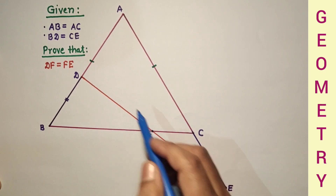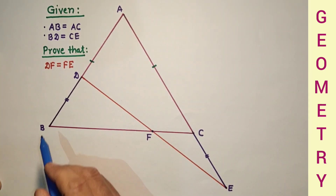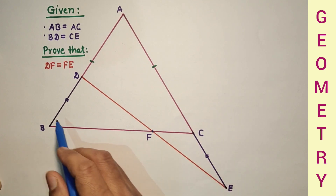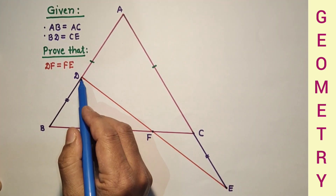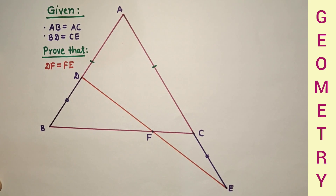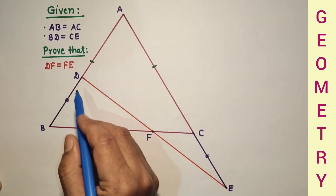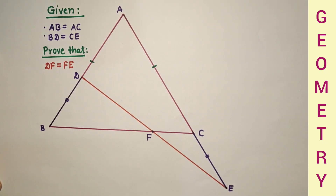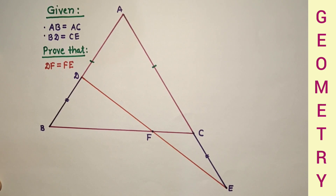This angle is equal to this angle because AB is equal to AC — the base angles of an isosceles triangle will be equal. However, this is an obtuse angle and this one is also an obtuse angle, so we cannot prove these two triangles congruent. That is the problem.